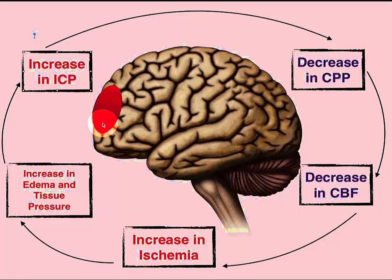Keep the head of bed at least 30 degrees. Establish a baseline neuroassessment because early detection of subtle changes provides the best outcome. Monitor airway, breathing, and circulation; check the ABGs and vital signs; maintain adequate cerebral perfusion pressure; look for Cushing's triad. Keep the head in a neutral position. The neuroassessment includes the Glasgow Coma Scale, level of consciousness, eyes, pupils, motor response — and whether the patient has decerebrate or decorticate posturing, as well as their response to pain.